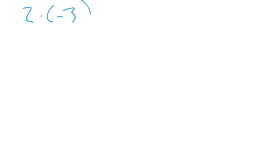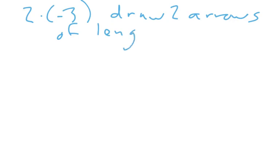Let's say you're looking at two times negative three. This is going to tell you to draw two arrows of length negative three. The first number tells you how many to draw, and the second one tells you what the arrows look like.